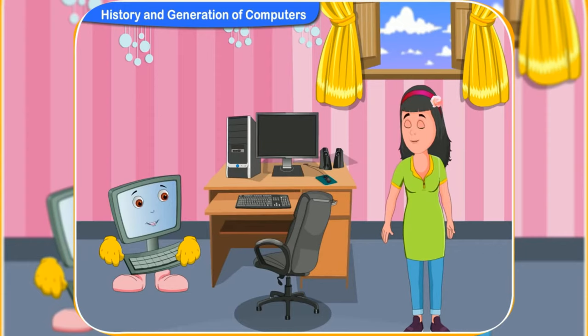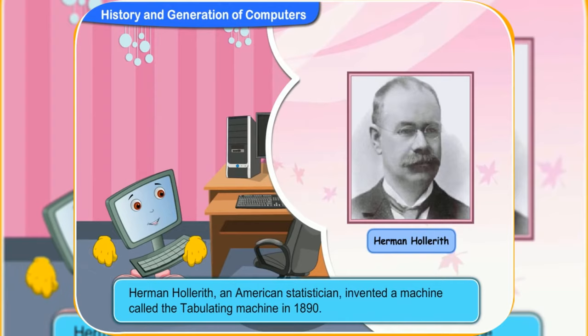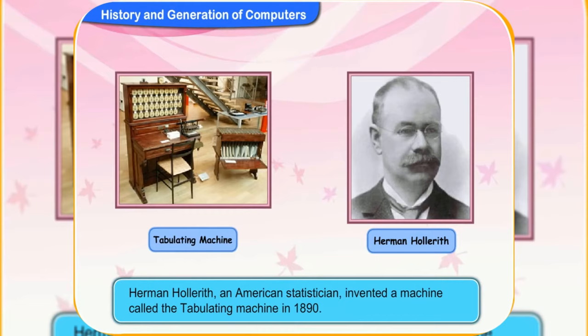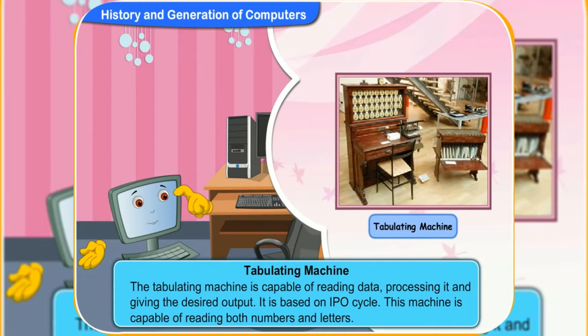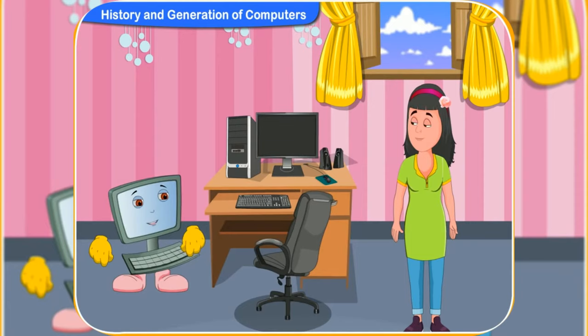Let us now discuss the tabulating machine. In 1890, Herman Hollerith, an American statistician, invented a machine called the tabulating machine. The tabulating machine is capable of reading data, processing it, and giving the desired output. It is based on the IPO — or input, processing, and output — cycle. This machine is capable of reading both numbers and letters.